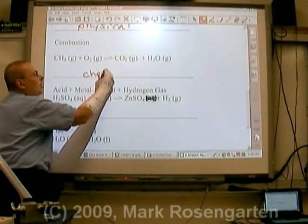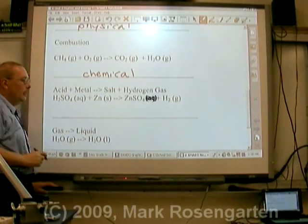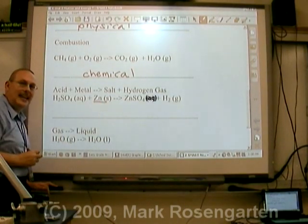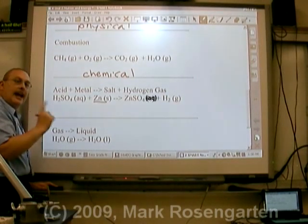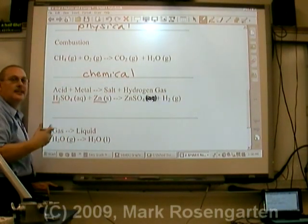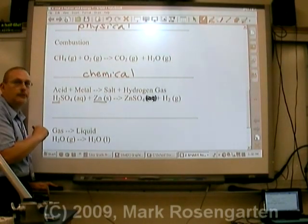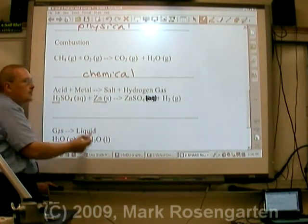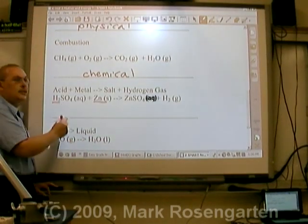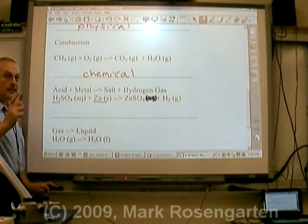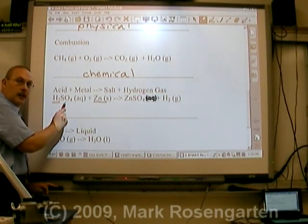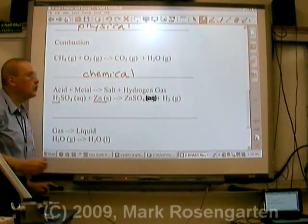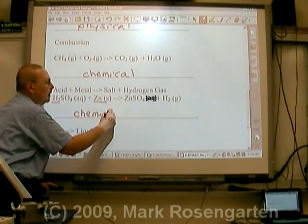Certain metals called active metals are very susceptible to being eaten away or dissolved by acids. Acids are substances that contain hydrogen ions dissolved in water. This is sulfuric acid, a very strong acid. When zinc reacts with sulfuric acid, the zinc takes the hydrogen's place and becomes zinc sulfate, and the hydrogens are released as gaseous hydrogen. Here the hydrogen was bound to sulfate in a compound; on the other side, the hydrogen has been set free. Because the identity of the substances has changed, this is also a chemical change.